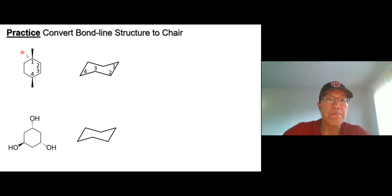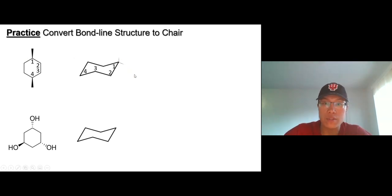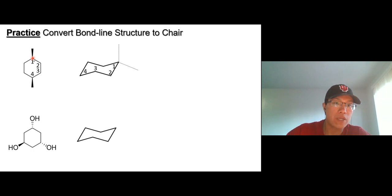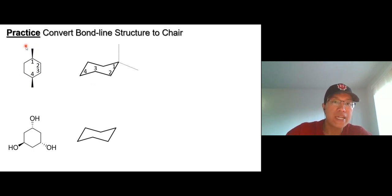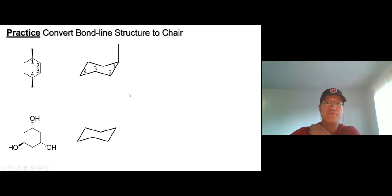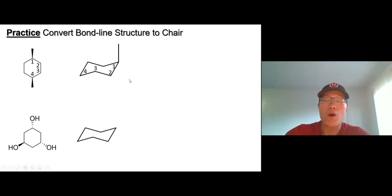There's a methyl group on carbon one. For carbon one, there are two options: you can draw axial or equatorial. Axial points up, equatorial points down. Now look at this carbon — the bond-line structure is from the top view, the chair conformation is from the side. This methyl group is pointing up toward you, which means it's going to be axial, pointing up.